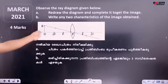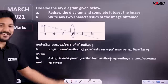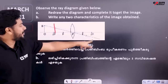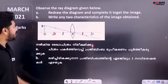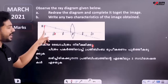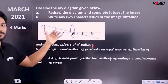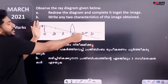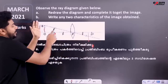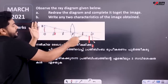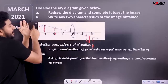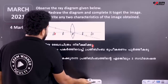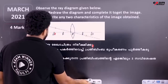Now we have the object at 2F. If you have the object at 2F, you can get the image at 2F on the other side. What is the example of the image in this case?